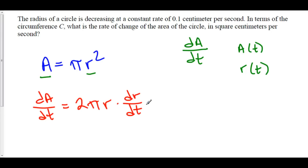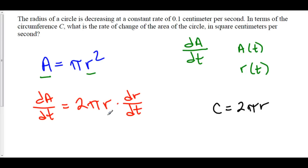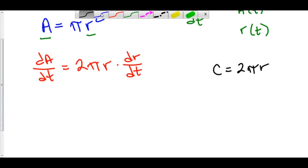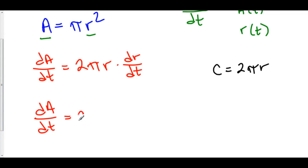We have now taken the derivative of all of our variables with respect to time t. Now we want to express this in terms of the circumference C. What is C? C is equal to 2πr. Look at here — we have a 2πr in here, so we just replace 2πr with C.